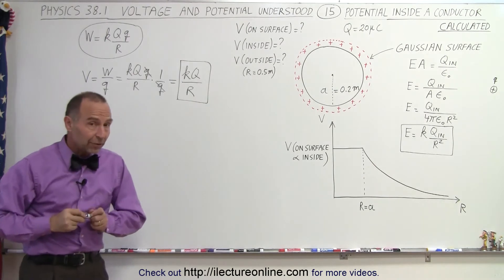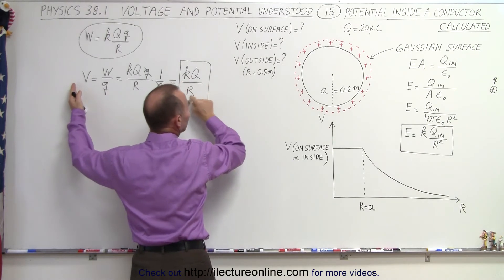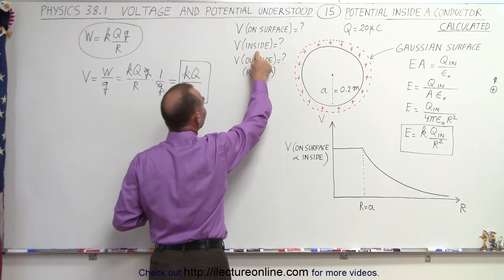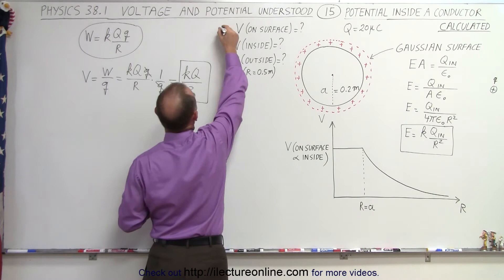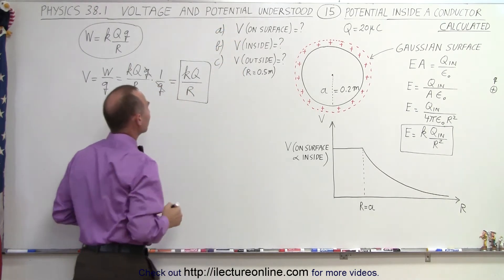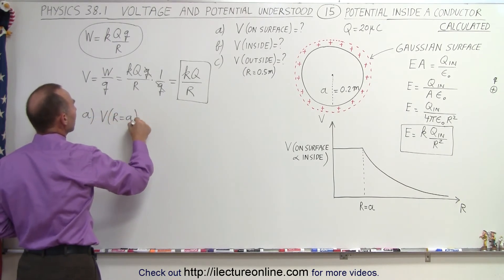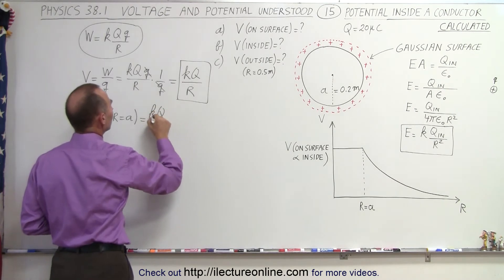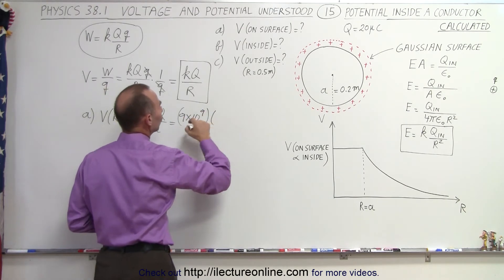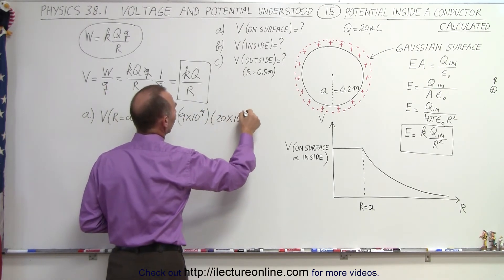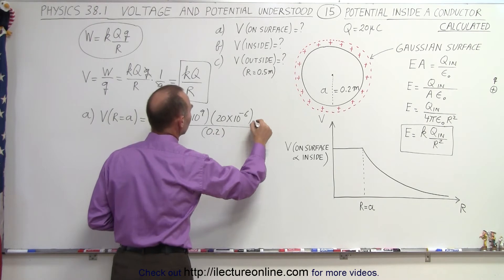This helps us figure out the voltage on the surface. For part A, letting r equal a, we find the voltage on the surface. For part B, we'll find the voltage inside, and for part C, the voltage at some different radius outside. For part A: V when r equals a is equal to kQ/a, which is 9×10⁹ times 20×10⁻⁶ divided by 0.2, in volts.